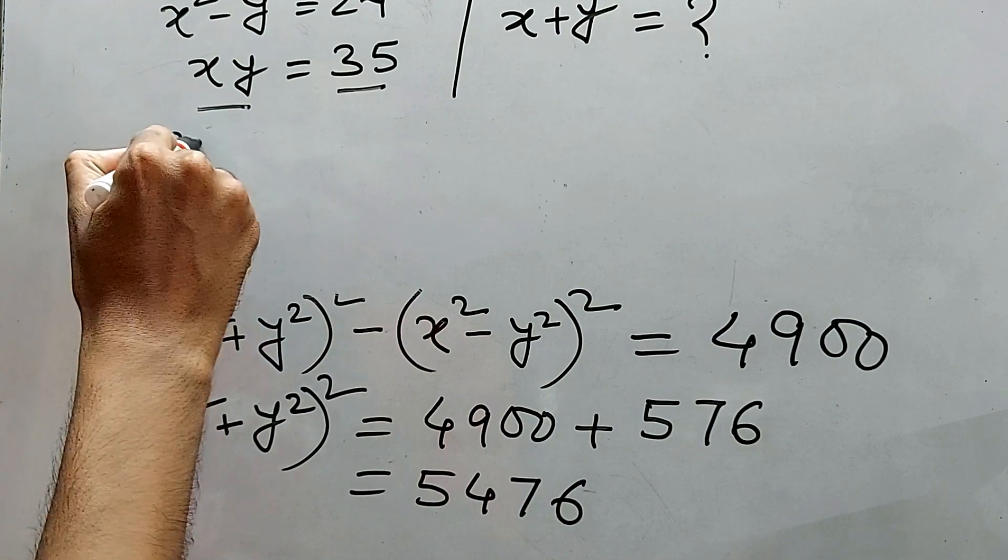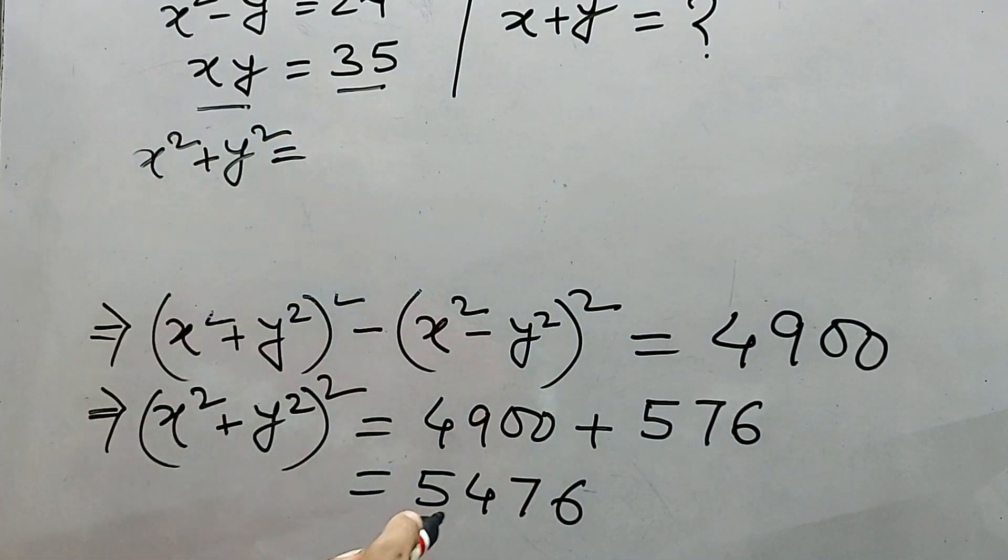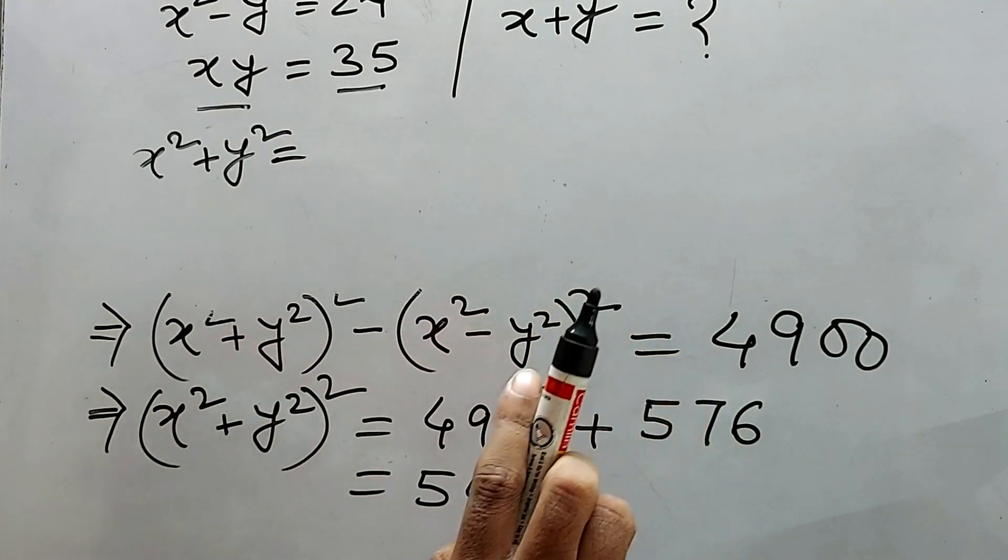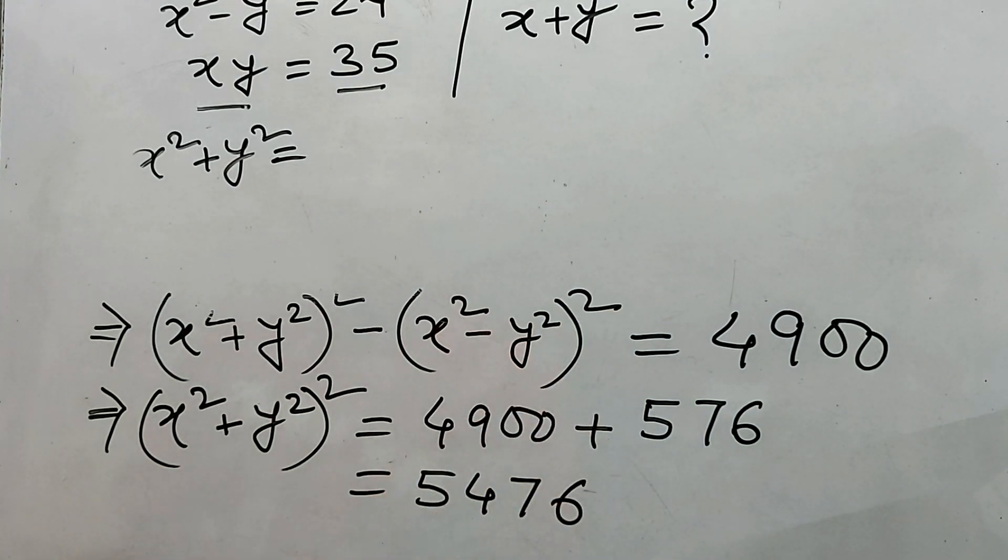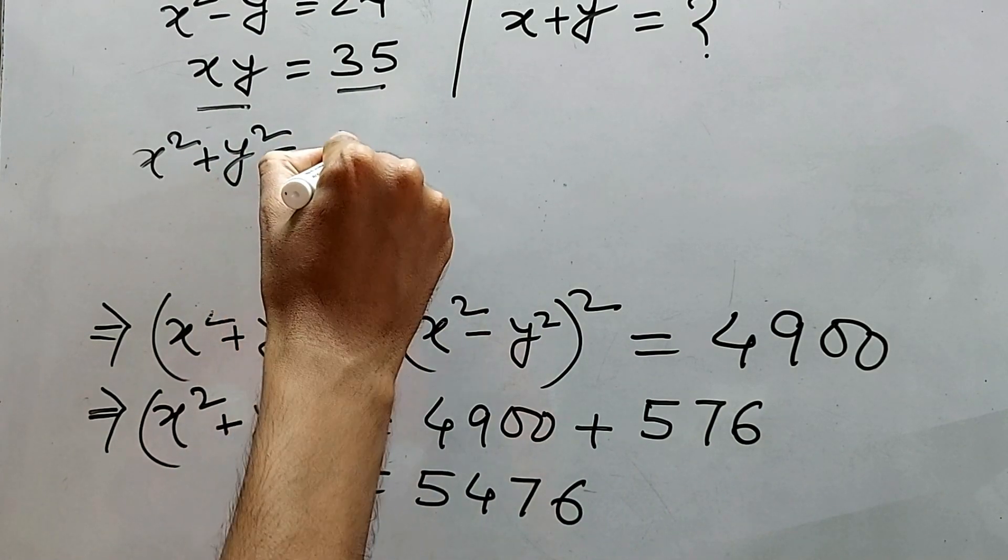Okay. X squared plus y squared is equal to square root of this. What is the square root of this? That right? How to do it? Okay. Please see in the I button. But frankly speaking, that will not be 74. It will be plus minus 74. Right?